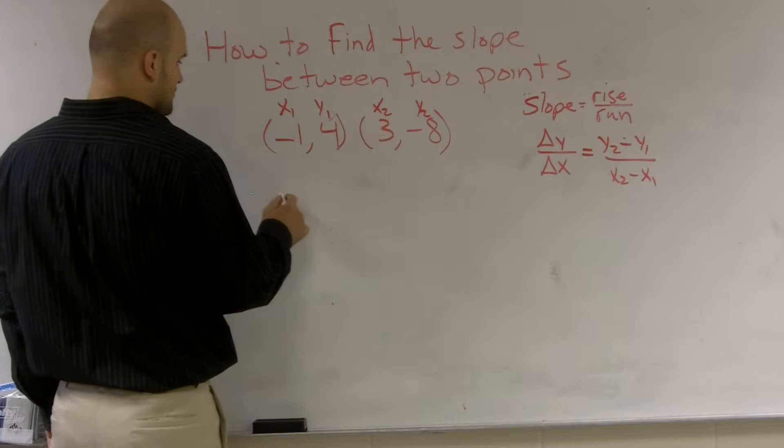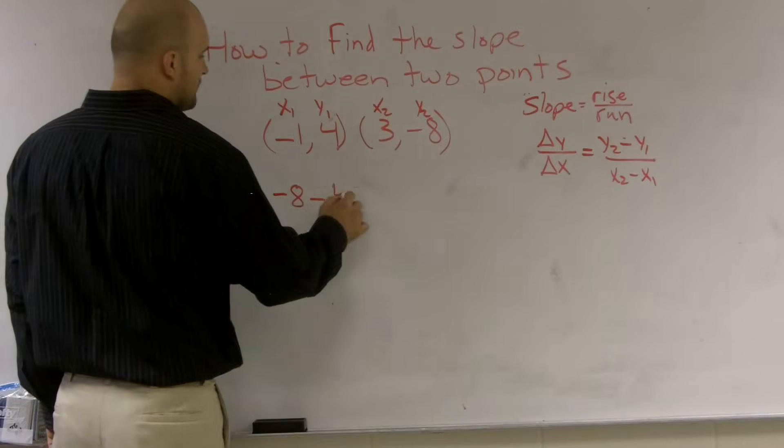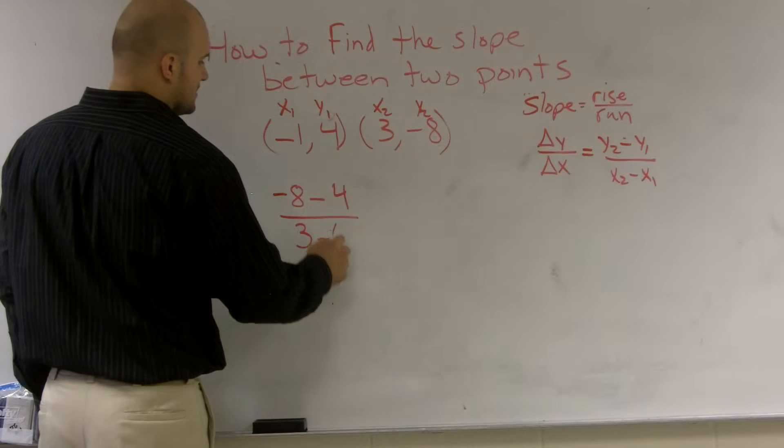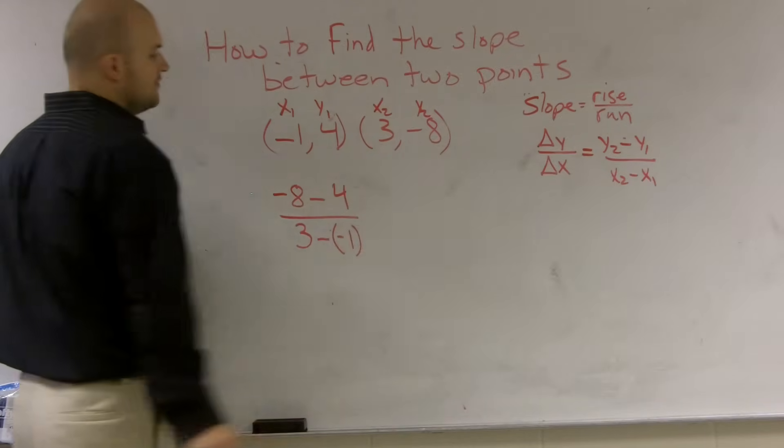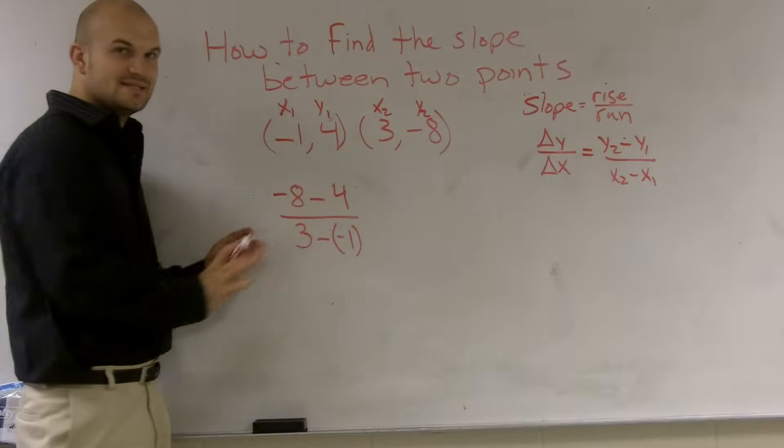Alright? So I just take my y2, which is a negative 8, minus y1, which is 4, all over x2, which is 3, minus, I'm going to put in parentheses, a negative 1. Remember, I'm going to keep those parentheses just to make sure that I'm not making any mistakes with my negatives.